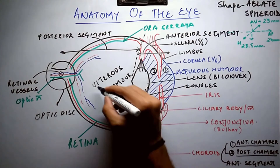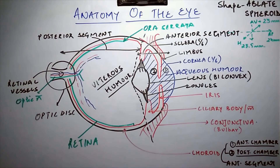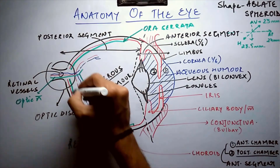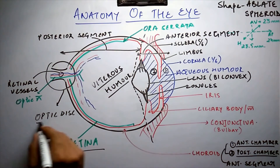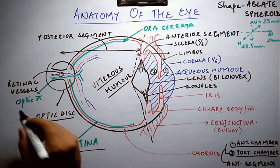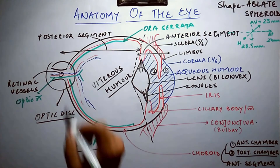Both chambers are filled by the aqueous humour and form the anterior segment. The posterior segment is filled by the jelly-like vitreous humour, contains the sensory retina, and also the optic disc, from where the optic nerve and retinal vessels enter and leave the eye.